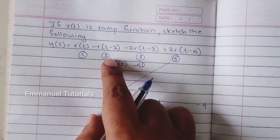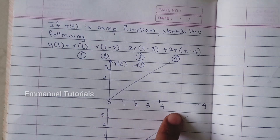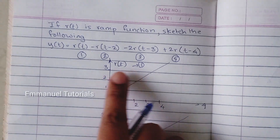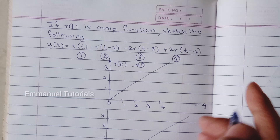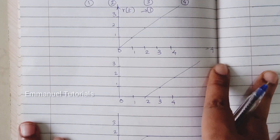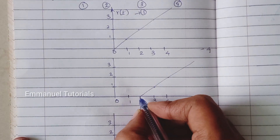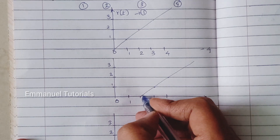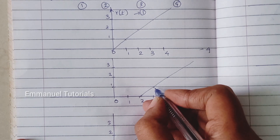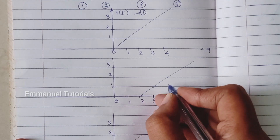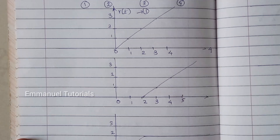The second part is R(t−2). Same signal — you're going to shift it to the right by 2 because it's a delay. So now the signal which started at 0 will start at 2, with amplitude 0 at T=2. At T=3 it's 1, at T=4 it's 2, at T=5 it's 3, and so on.